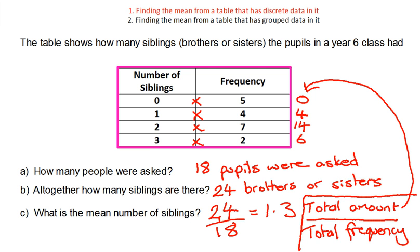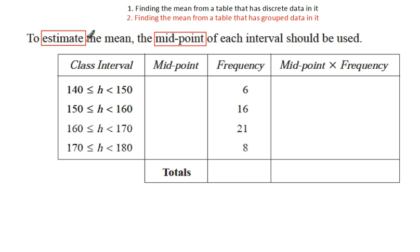Okay, so what about if our data is grouped then? So when it's grouped for us to estimate the mean, and I've got here in red as well, the midpoint of each interval should be used for this. Now, it's very unlikely in the exam. Well, it's less common in the exam, I should say, for them to tell you to do the midpoint and to tell you to do the midpoint times the frequency. That's just here for this first example to help you understand what's happening.